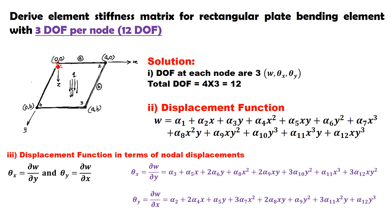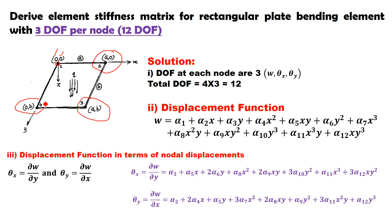The origin is taken at node number 1, where the Cartesian coordinates are (0, 0). The size of this rectangular element is A × B — length is A and width is B. Coordinates of node 2 are (A, 0), coordinates of node 3 are (A, B), and coordinates of node 4 are (0, B).